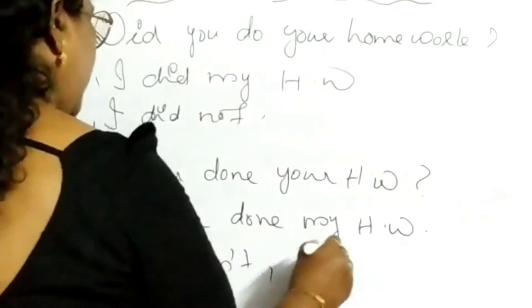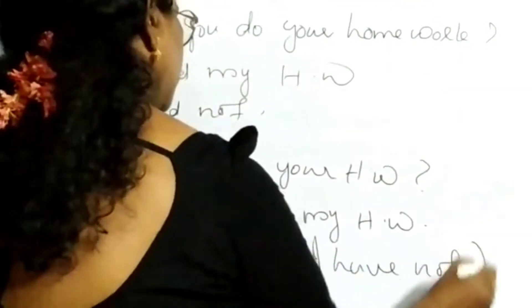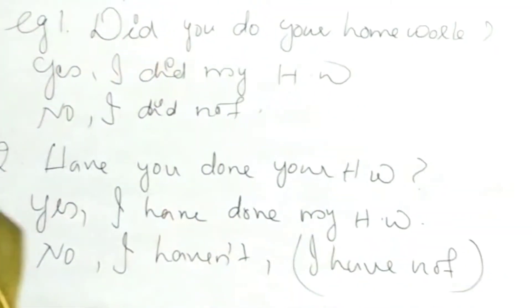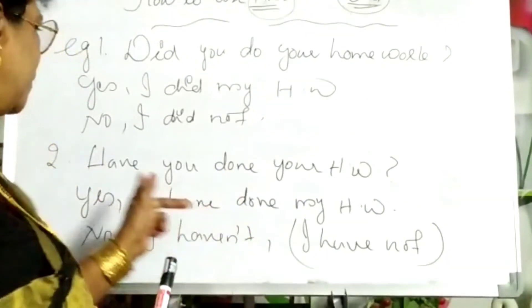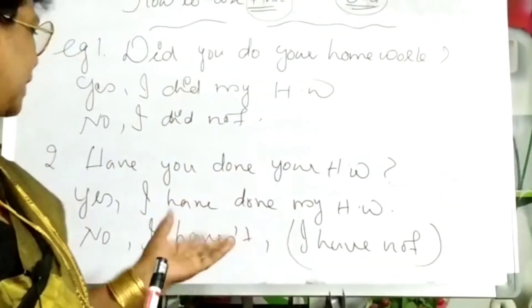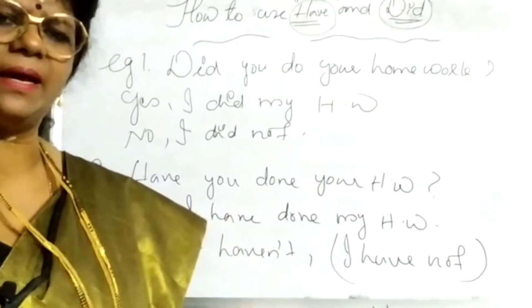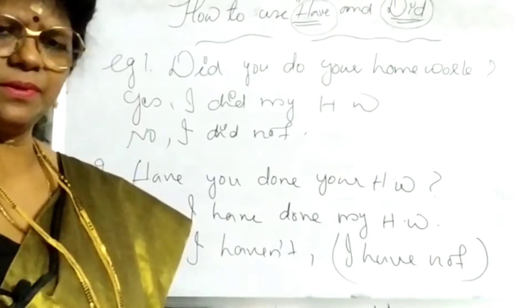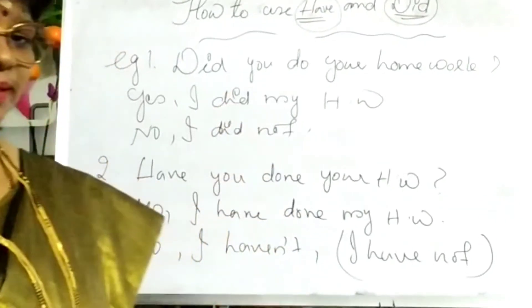When someone asks 'Have you done your homework?', the correct reply is: 'Yes, I have done my homework.' Or else, 'No, I haven't' or 'I have not.' Using contractions like 'I haven't' is better in such places. So, 'Have you done your homework?' — 'Yes, I have done my homework' or 'I haven't.'